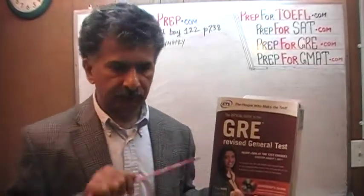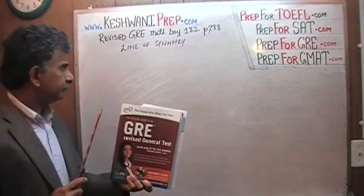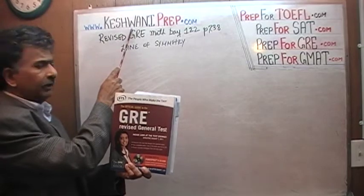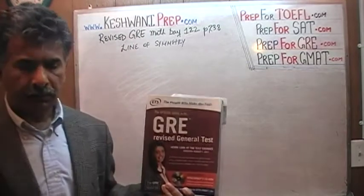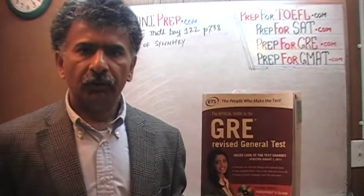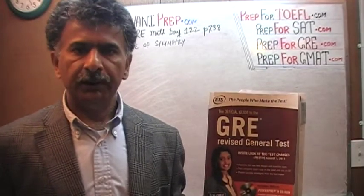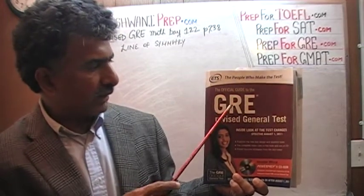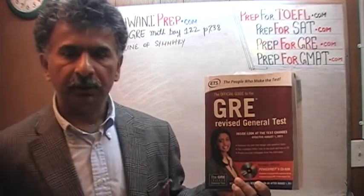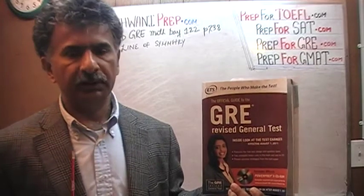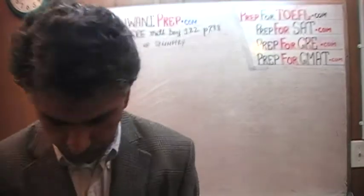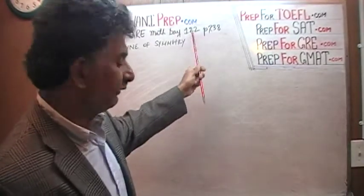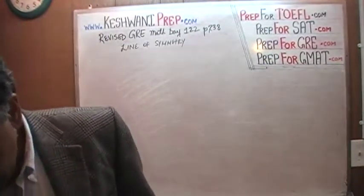Hello, my name is Keshwani — S-K-E-S-H-W-A-N-I — Keshwani. We are here because we want to prepare for the GRE. We have been solving GRE math questions out of this book, the Official Guide to the GRE, the Revised General Test. If you do not own this book already, purchase it immediately — you are going to need it. The problem we are about to solve is on page 238, and today is our lesson number 122.